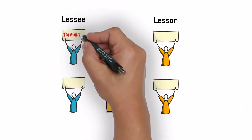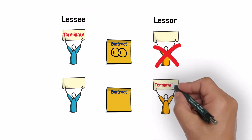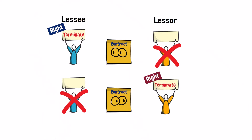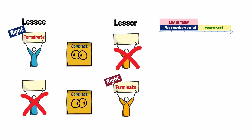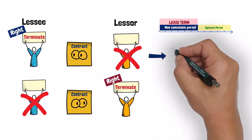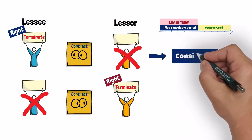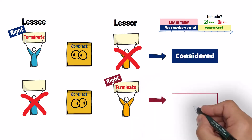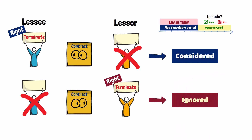Note that both the lessee and the lessor can have the right to terminate the lease agreement without the consent of the other party, but there is a difference between these rights. The lessee's right to terminate the lease without the consent of the lessor is an option that should be considered when determining the lease term. But the lessor's right to terminate the lease without the consent of the lessee is ignored when assessing the lease term.